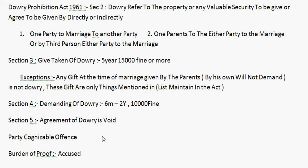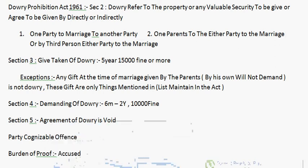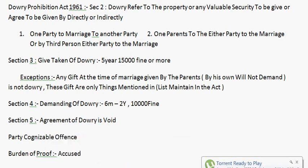Aage hai burden of proof. Yeh burden of proof Dowry Prohibition Act mein hamesha accused ke paas hota hai — usse yeh thabit karna hai ki usne dowry nahi li, dowry nahi mangi. Yeh accused ke paas hai ki usne yeh thabit karna hai ki usne dowry nahi li.